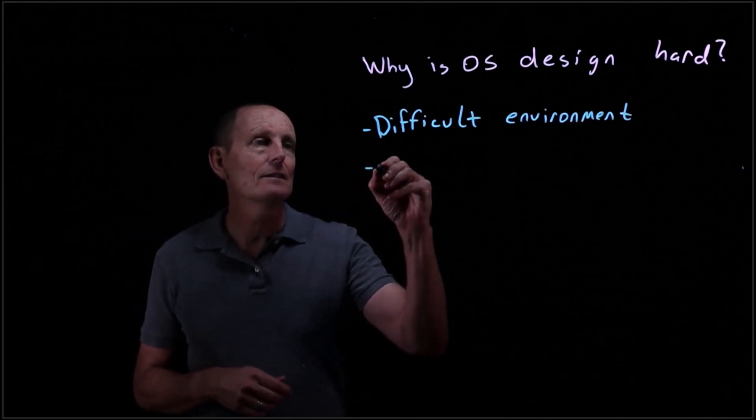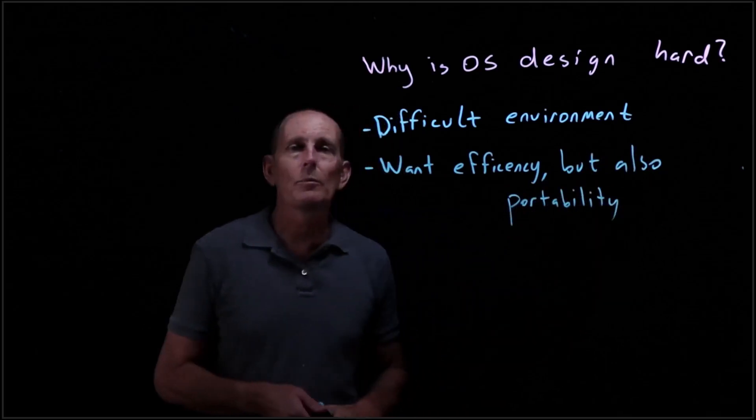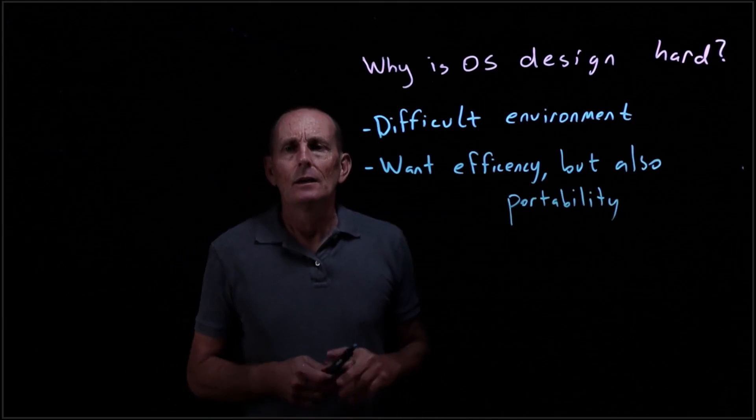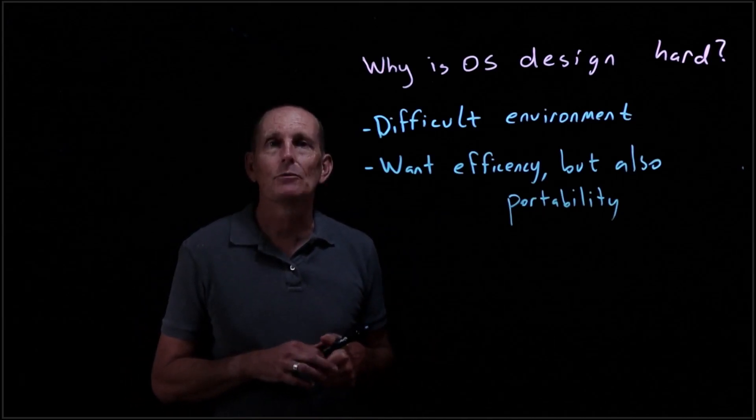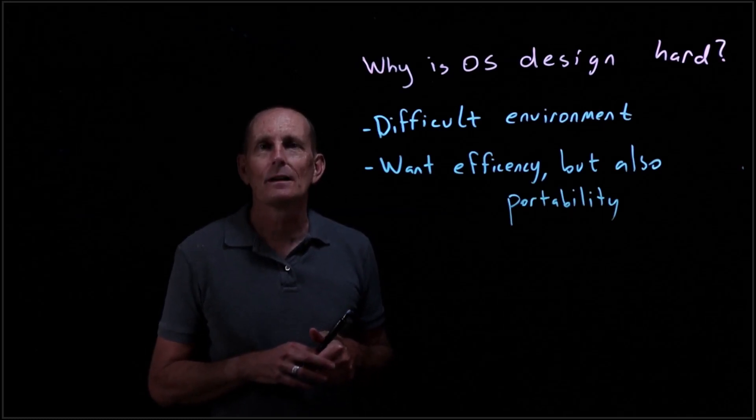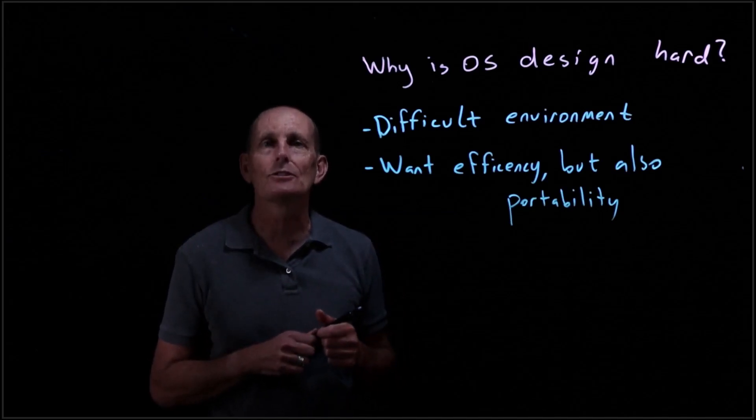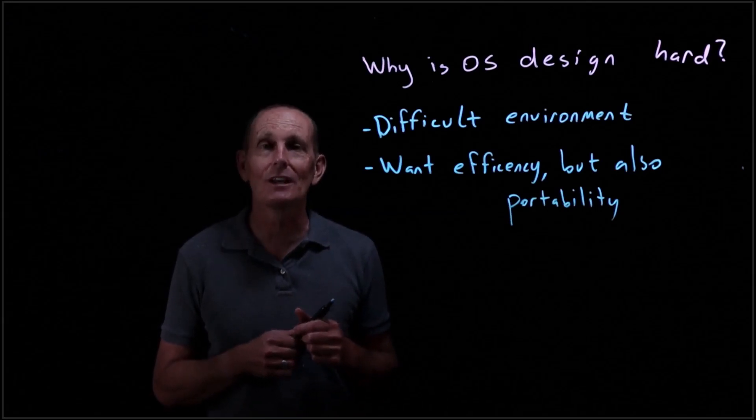A second reason is we want both efficiency and portability. Before UNIX, no operating systems were portable. They were written in assembly language for their target CPU. It was really UNIX that first, in a big way, started using a high-level language—if you call C a high-level language. Some people actually just call it a portable assembly language.